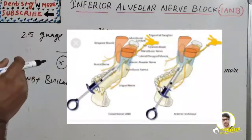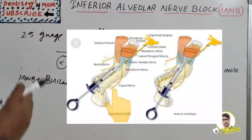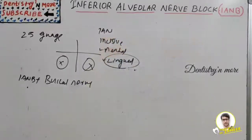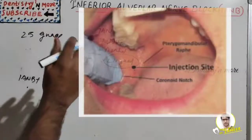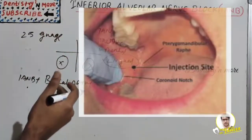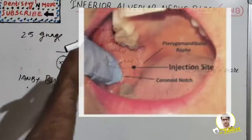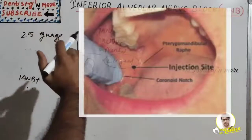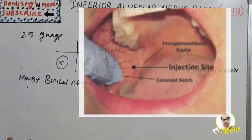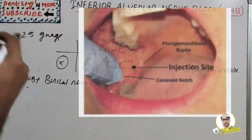The landmarks for IANB are: the coronoid notch — the greatest concavity on the anterior border of the ramus; the pterygomandibular raphe; and the occlusal plane of the mandibular posterior teeth.